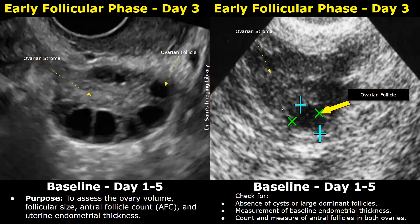In follicular monitoring, the baseline ultrasound scan is the first scan. It can be done during the early follicular phase, days one to five, with day three usually chosen to start monitoring. The purpose of this scan is to assess the ovarian volume, determine the antral follicle count, measure each follicle, and measure the endometrial thickness. These features must be evaluated in both ovaries. It is important to check for any ovarian cysts, large dominant follicles, or other pathologies at baseline.